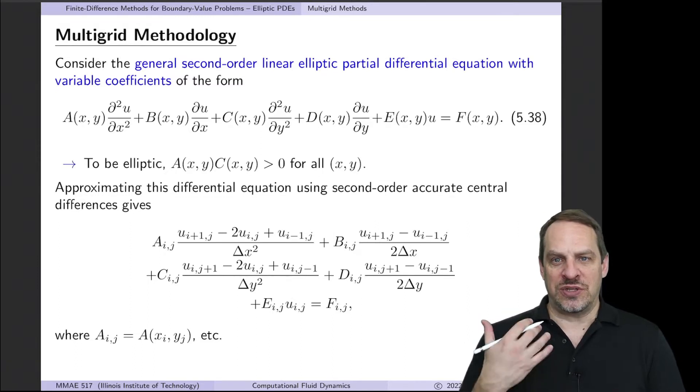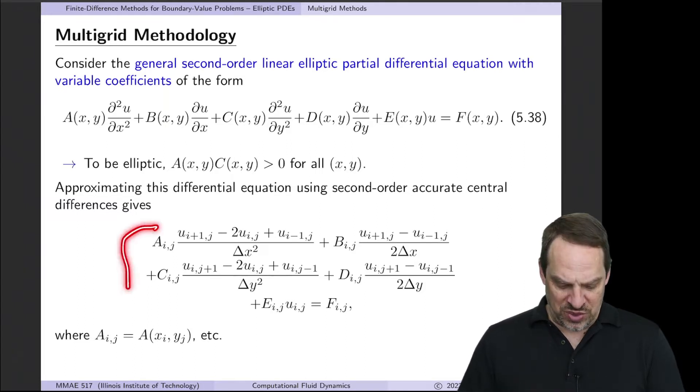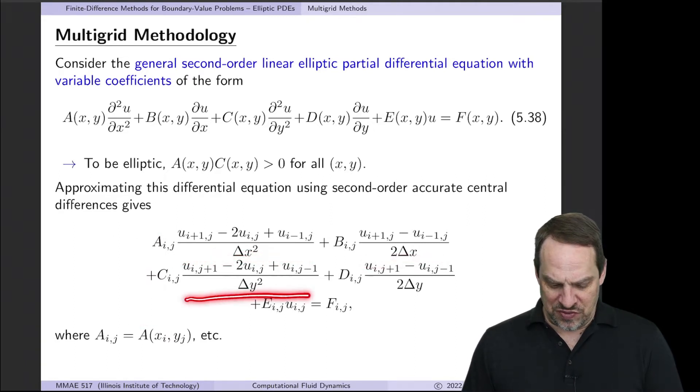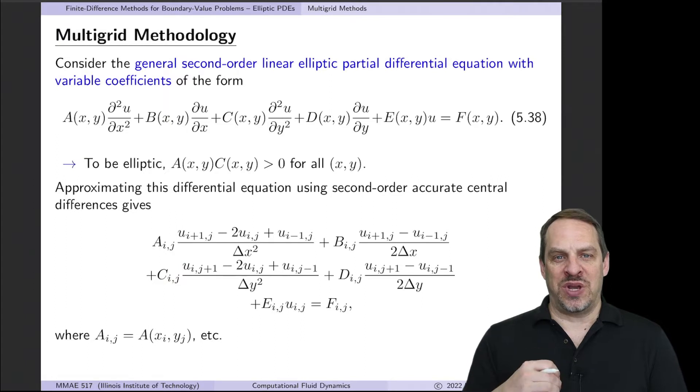If we use second order accurate central difference approximation for the first and second order derivatives, then we get this mess right here. So here's the second derivative in x, first derivative in x, second derivative in y, first derivative in y, and I've used our usual ij notation to indicate for example A evaluated at x_i and y_j.